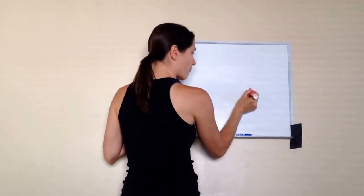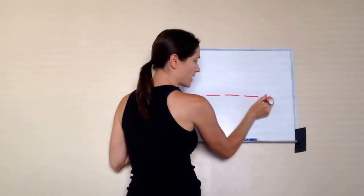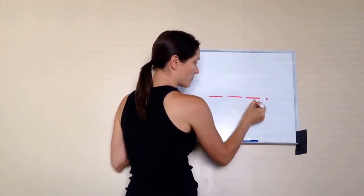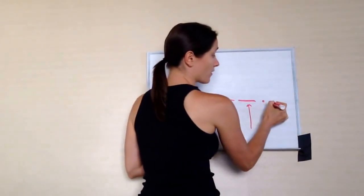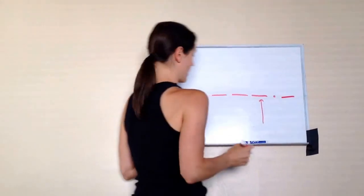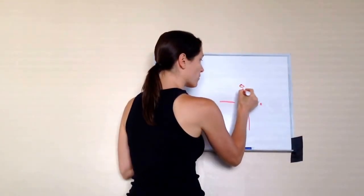Okay, and here's my decimal. Do you remember what place this is called? Tenths. Almost. That's on this side. If we were doing tenths, hundredths, thousandths. Okay, but we're not doing that side yet. Ones, right? Ones, very good.